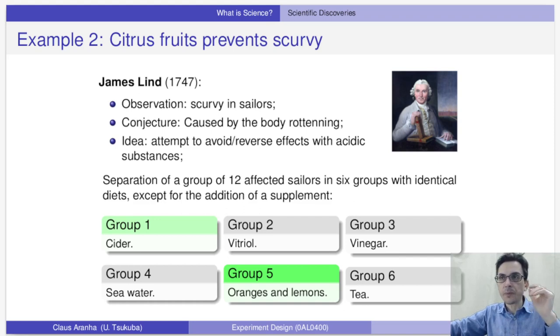The key idea of the experiment was that scurvy caused the body to rot, and one way to prevent rot is to use acid substances. So, in Lind's experiment, he gave different food supplements to groups of sailors affected by the disease. It's interesting to see this and look about what kind of supplements he chose. So, we have, for example, vinegar, orange, and lemons, which are acidic, so they follow this idea about how the disease works.